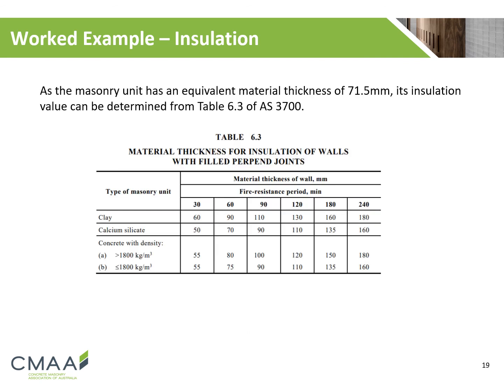Using Table 6.3 of AS 3700, we can determine the insulation value. As our unit has a density greater than 1800 kg/m³, we will use Section A of the concrete masonry portion of the design table. Our material thickness does not meet or exceed 90mm, hence the 60mm value must be adopted. Reading from the table, we determine our insulation value to be 80 minutes.